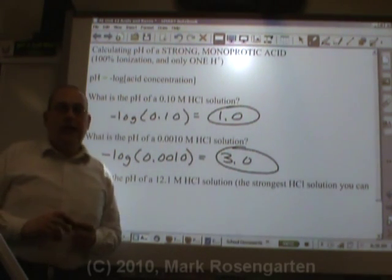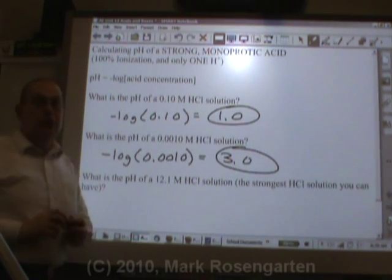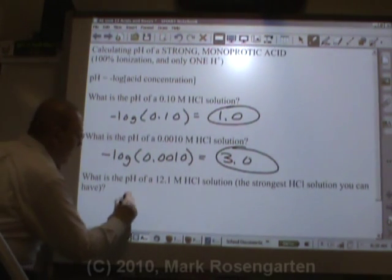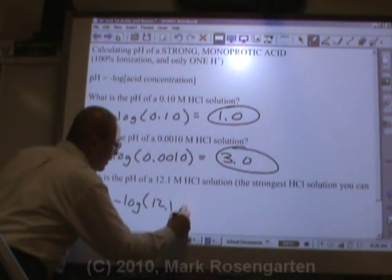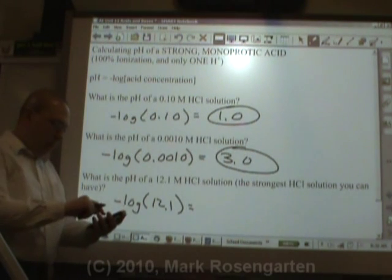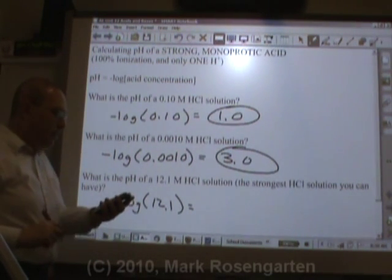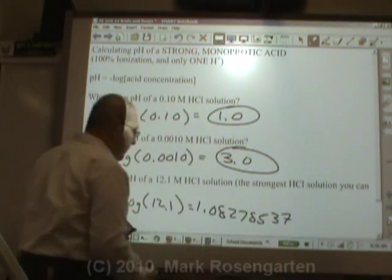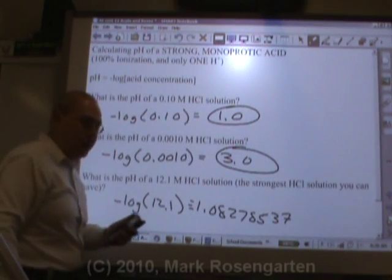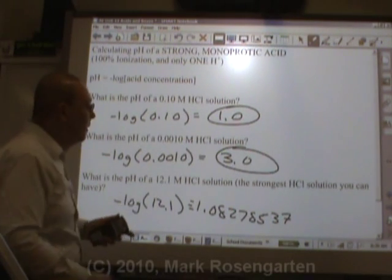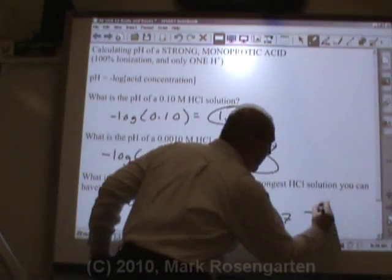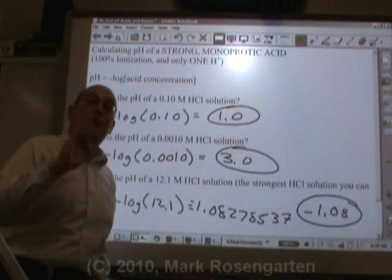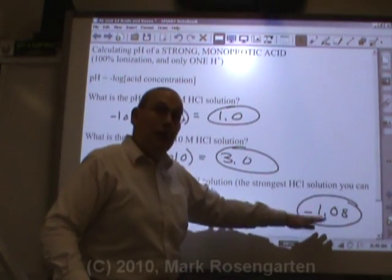The strongest hydrochloric acid solution you can purchase — a saturated solution of hydrochloric acid — is 12.1 molar. Let's find the pH of that. Negative log of 12.1 comes out to 1.08278537. I have to reverse it — my calculator says the log is a positive number, so I reverse the sign. With three significant figures, that's negative 1.08. Yes, it is possible to have negative pHs if your acid is really, really strong.